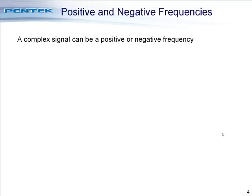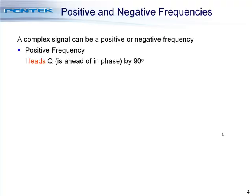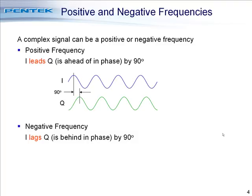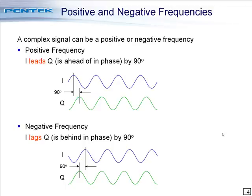Complex signals can be a positive or a negative frequency. For positive frequencies, I leads Q — that is, the I component is leading or ahead in phase of the Q component by 90 degrees. You can see in these two waveforms that the I, which is the blue waveform, is ahead of the green Q waveform by 90 degrees. For these two waveforms, the blue I component is behind the green Q component by 90 degrees — and so this is a negative frequency.